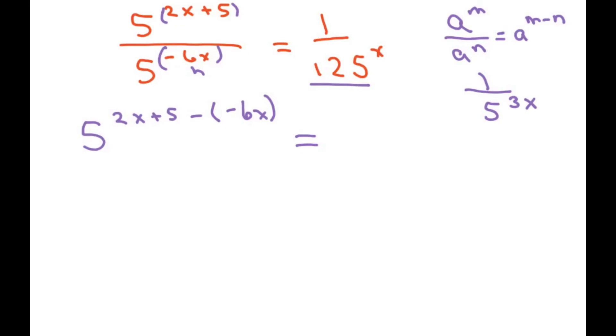So in order to do that, I want to move this up in the numerator. And you use your negative exponent property. And that's just going to be 5 to the negative 1. And then you multiply it by whatever we have, which is 3x.